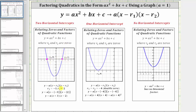Therefore, the function can be written in the form a times the quantity x minus negative three, times the quantity x minus two, which simplifies to a times the quantity x plus three, times the quantity x minus two.